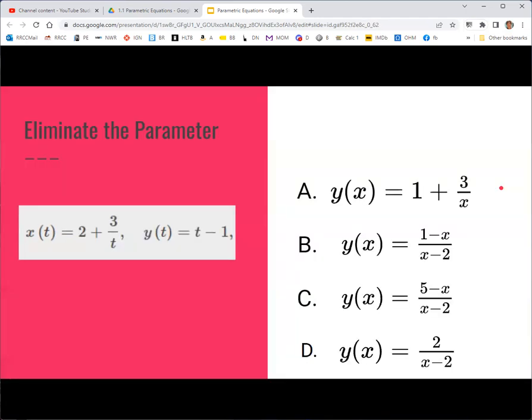Why don't you practice eliminating the parameter with this set of parametric equations? Pause the video if you need some time to work on this. You should get that the correct answer is C. Again, you can solve for t in either equation, and then put that into the expression for t in the other equation. With this one, it might look a little different. You might just have to combine the two fractions that you get, but you should be able to show it's equivalent to answer choice C.